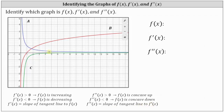Let's begin by analyzing the behavior of the functions. Notice function a always has positive function values and is always decreasing. Function c always has negative function values and is always increasing. Function b has negative function values when x is less than one, and positive function values when x is greater than one, and function b is always increasing. Notice function b is the only function that has both positive and negative function values, and therefore it cannot be a derivative for function a or function c.